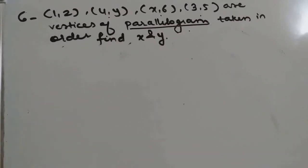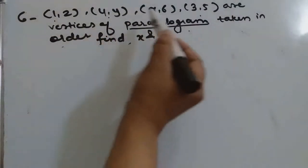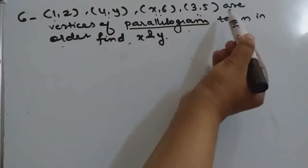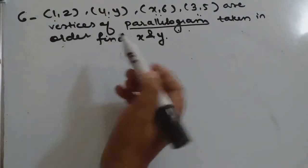In this question, 4 vertices are given to us: (1, 2), (4, y), (x, 6), and (3, 5). These are the vertices of a parallelogram taken in order.